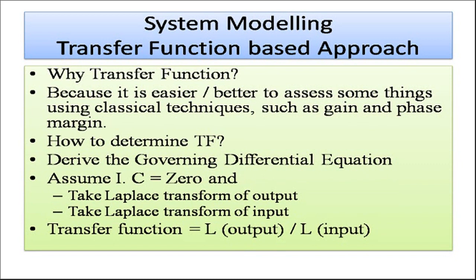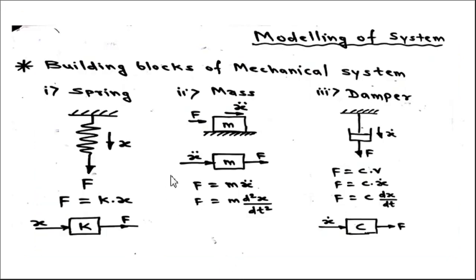When modeling, we need to find the relationship between input and output. The term specifying this relationship is called the transfer function. We study transfer functions because it is easier to assess gain and phase margin using classical techniques. To determine a transfer function: first derive the governing differential equation of the system, then assume initial conditions equal to zero, take the Laplace transform of output and input, and the transfer function is the Laplace transform of output divided by the Laplace transform of input.